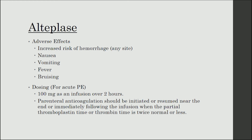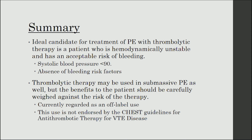The adverse effects of alteplase include an increased risk of hemorrhage at any site, nausea, vomiting, fever, and bruising. The dosing of alteplase for PE is 100 mg as an infusion over 2 hours. Parenteral anticoagulation should be initiated or resumed near the end of or immediately following the infusion when the patient's partial thromboplastin time or thrombin time is twice normal or less. In summary, the ideal candidate for treatment of PE with thrombolytic therapy is a patient who is hemodynamically unstable — systolic blood pressure less than 90 — and has an acceptable risk of bleeding, meaning an absence of bleeding risk factors.